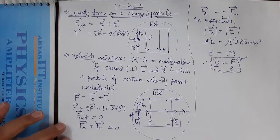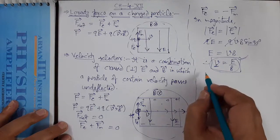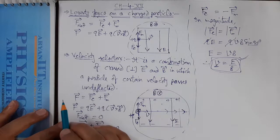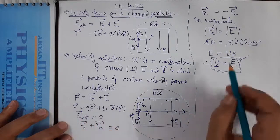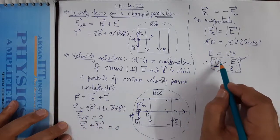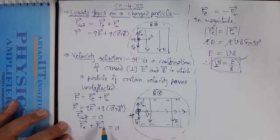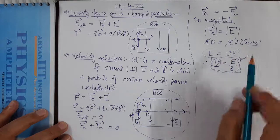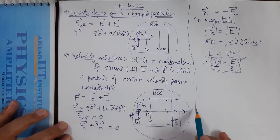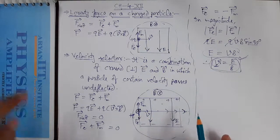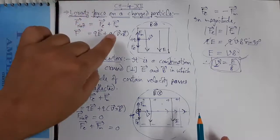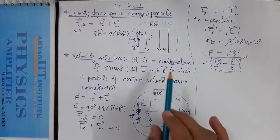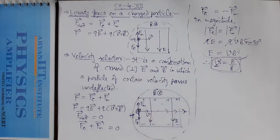Hope you understand. The velocity selector can be used in many devices where a beam of particles of a certain velocity is required but the source produces particles of many different velocities. Particles satisfying the condition V = E/B pass through undeflected; the rest are deflected. That is about the Lorentz force — both electric and magnetic — and the velocity selector mechanism.